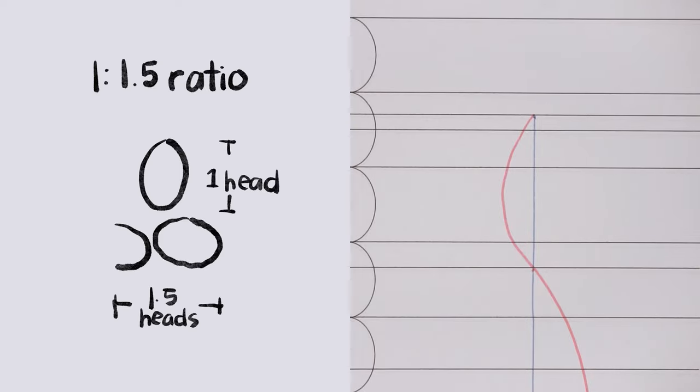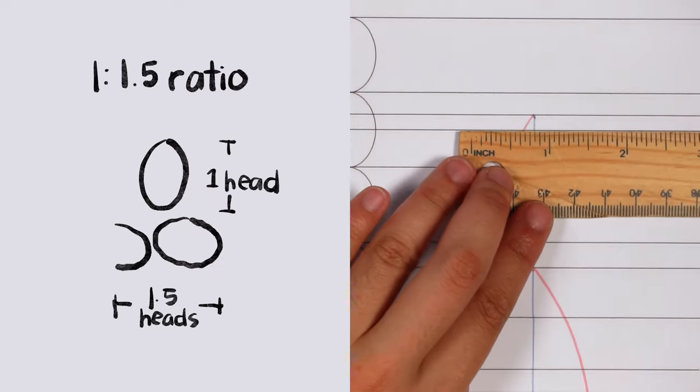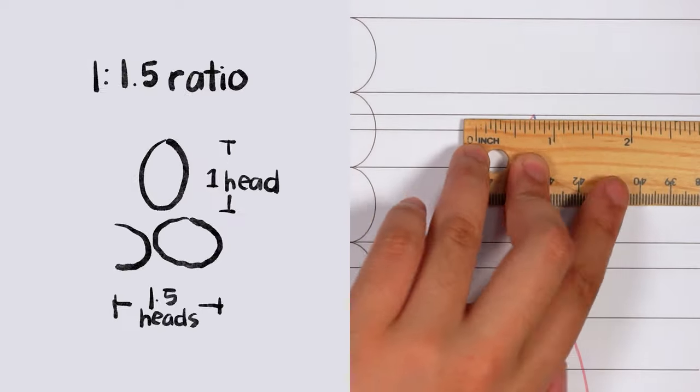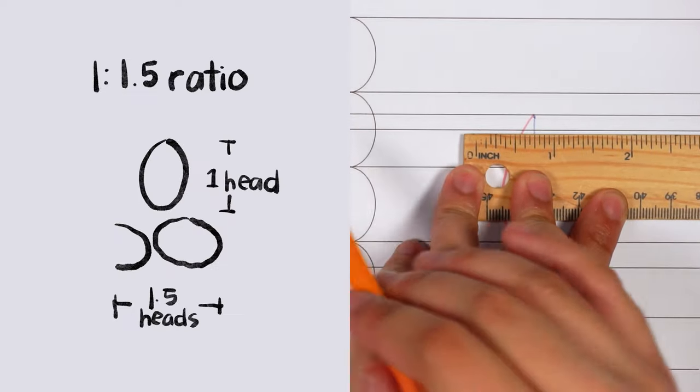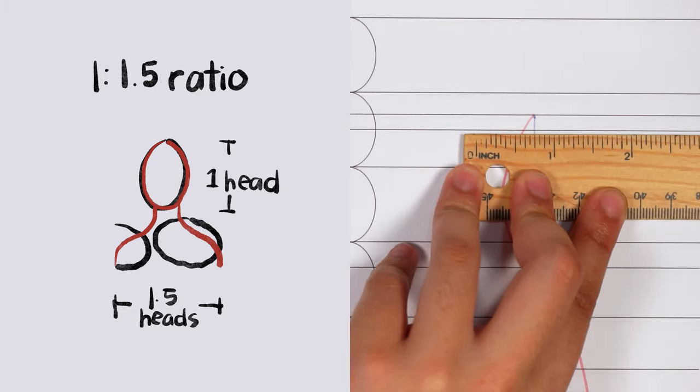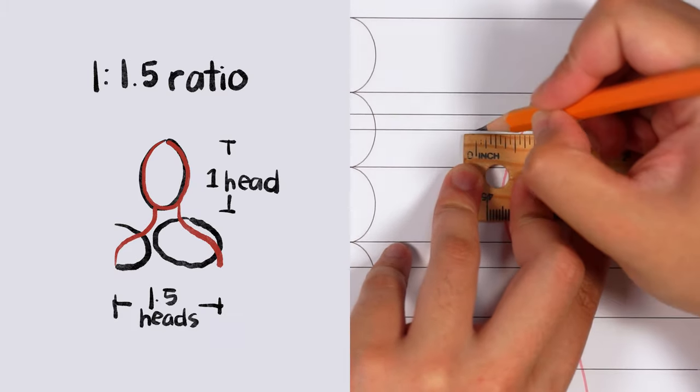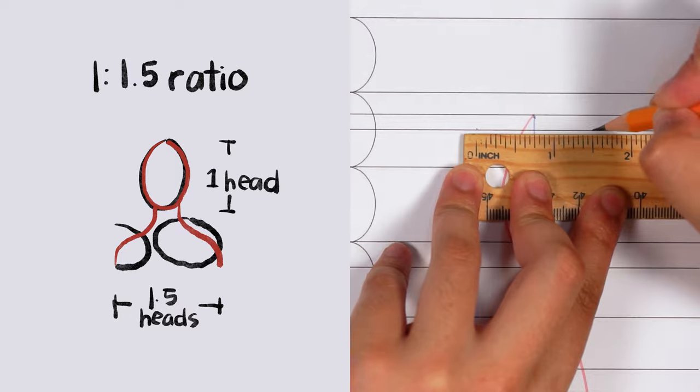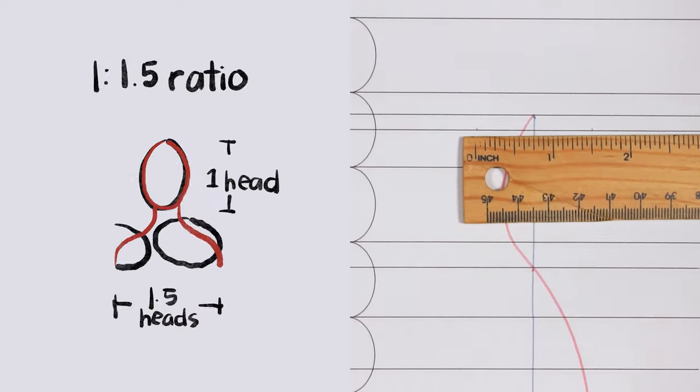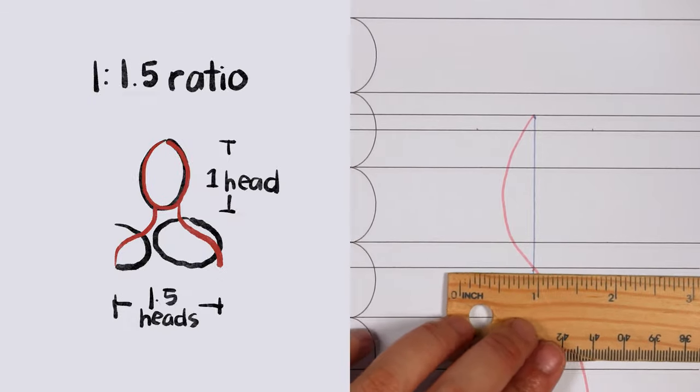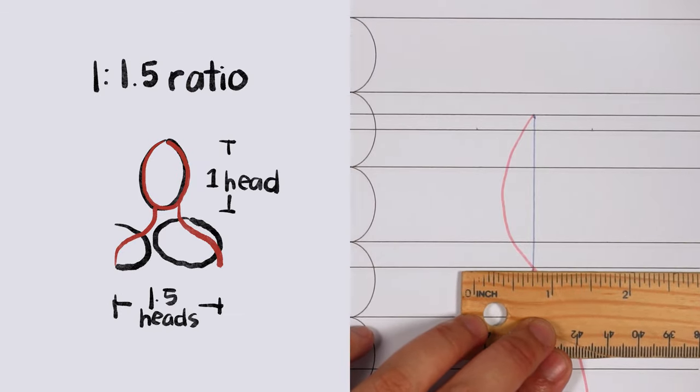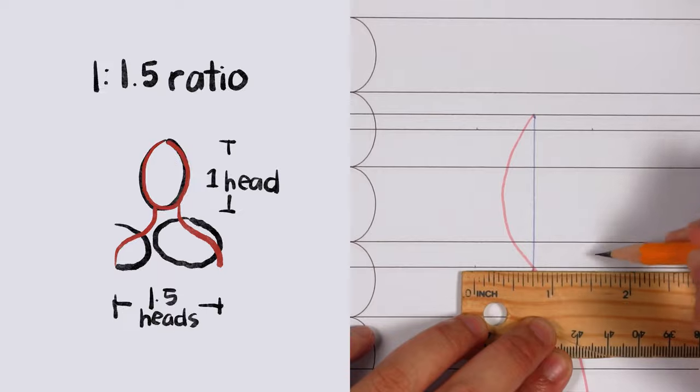When it comes to drawing the width of the body, I like to use a 1 is to 1.5 ratio. What that means is if I have drawn the head as one inch tall, then the width of the shoulders will be 1.5 inches wide. If I decide to draw the head to be bigger than one inch tall, such as two inches tall, then we do the math and calculate that the width of the shoulders will be 1.5 times 2, meaning it will be 3 inches wide in total.